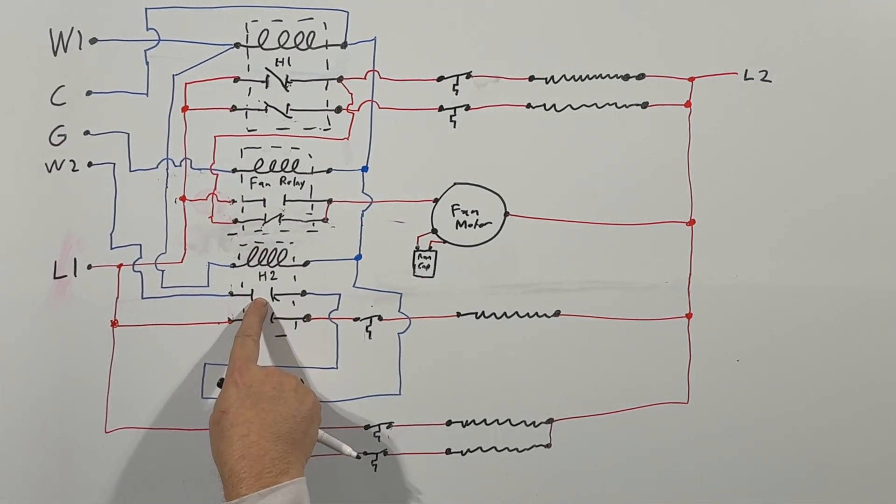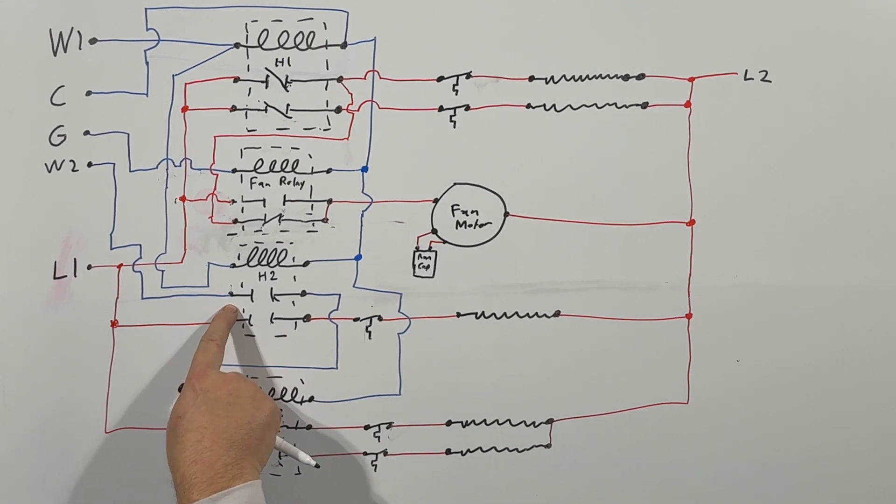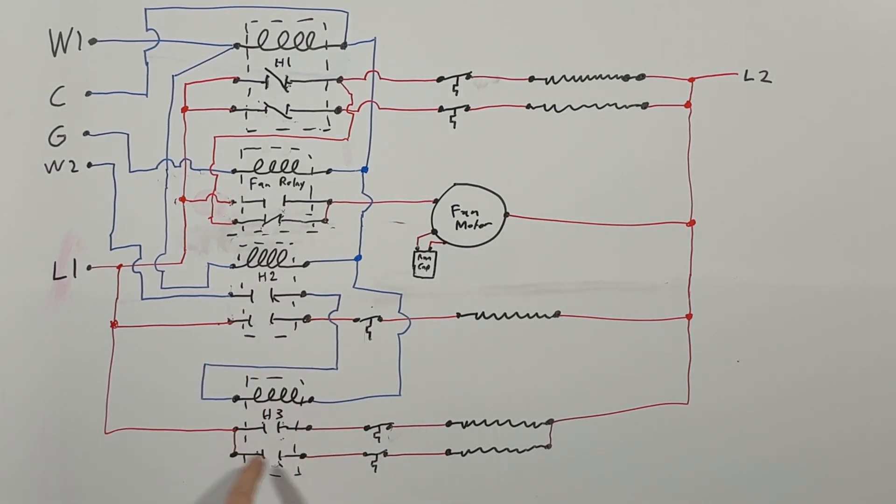So if you wanted to call for heating two or W2, you could only... it'll only do something if you're calling for W1. So if you have no... if you have not energized W1, these contacts will stay open, right?